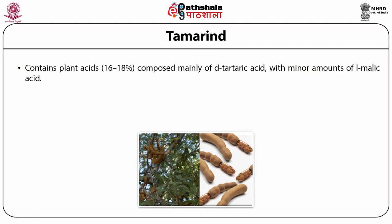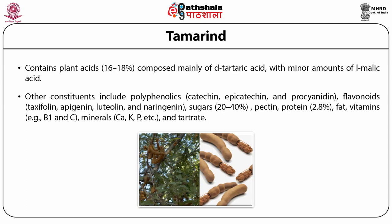Tamarind contains plant acids about 16 to 18%, composed primarily of D-tartaric acid with minor amounts of L-malic acid. Other constituents include polyphenols such as catechin, epicatechin, and procyanidin, flavonoids: taxifolin, apigenin, luteolin, and naringenin, sugars about 20 to 40%, pectin, protein about 2.8%, fat, vitamins B1 and C, minerals like calcium, potassium, phosphorus, and tartrate. It also contains a volatile fraction of over 60 identified compounds including limonene, terpinen-4-ol, nerol, alpha-terpineol, geraniol, and geraniol, which are responsible for its characteristic taste.